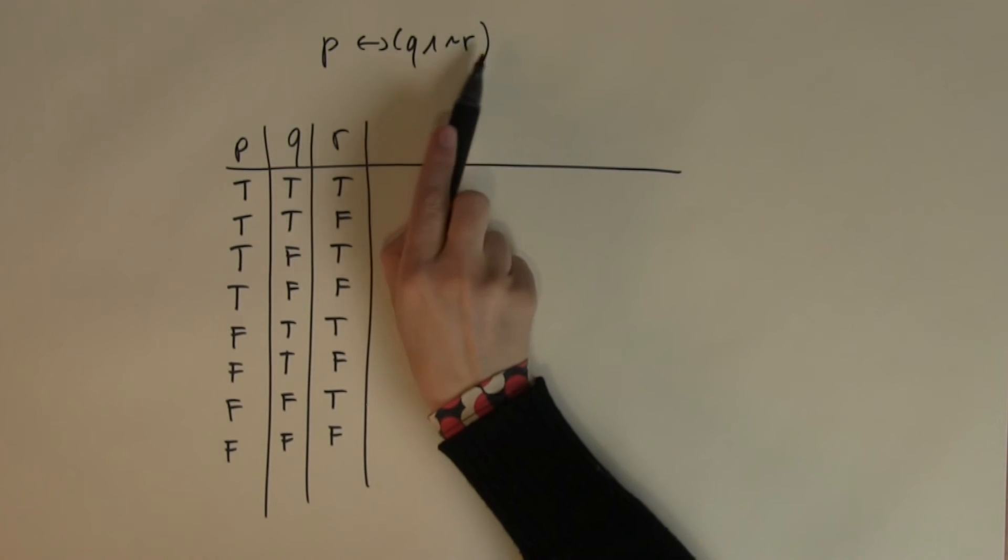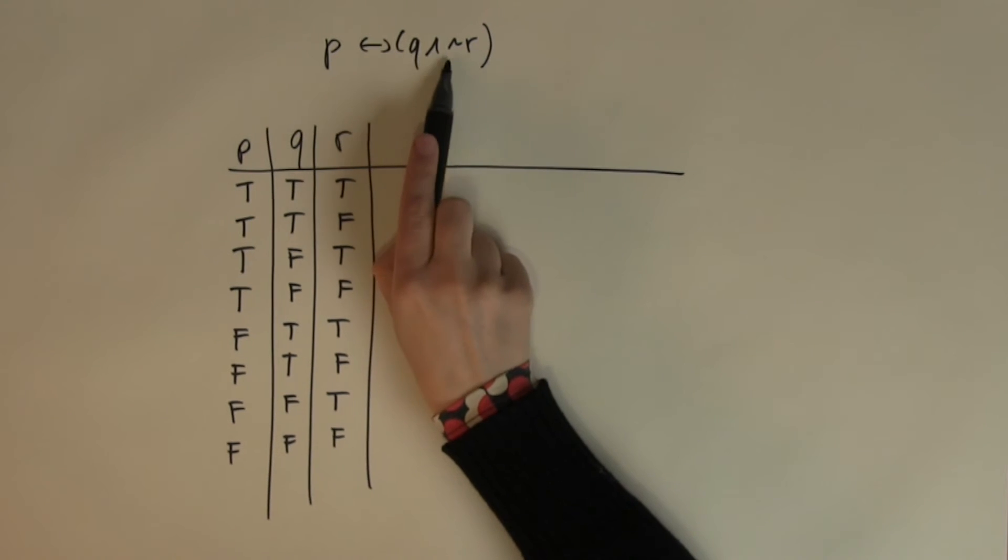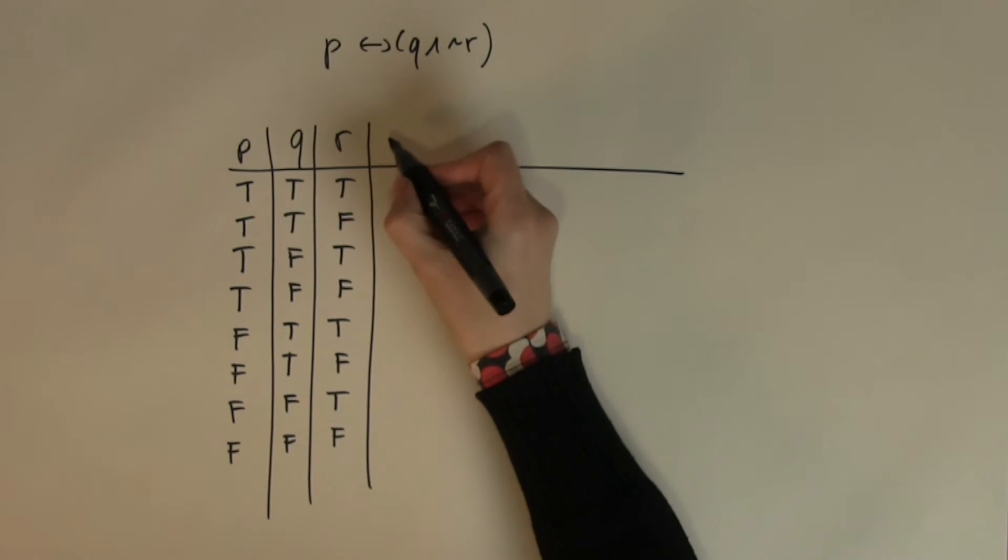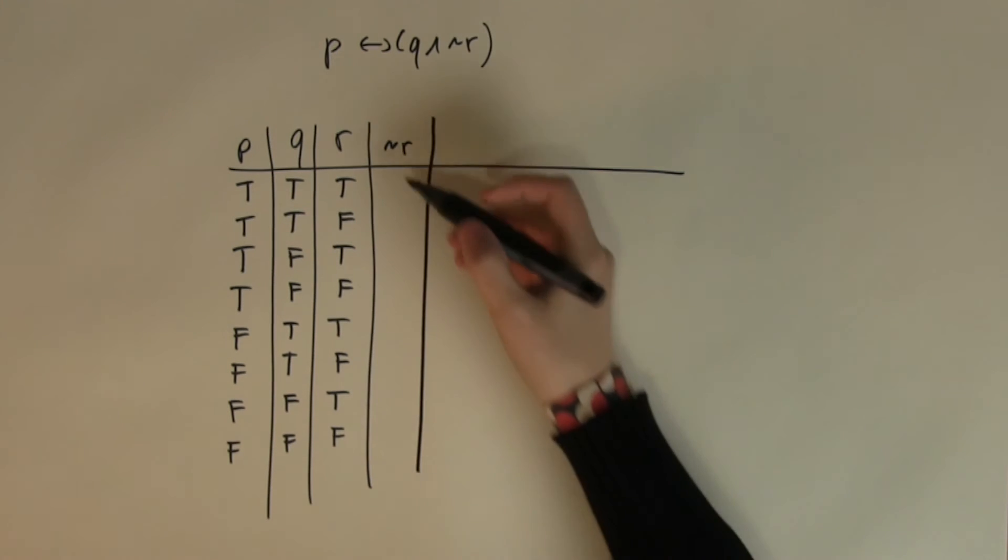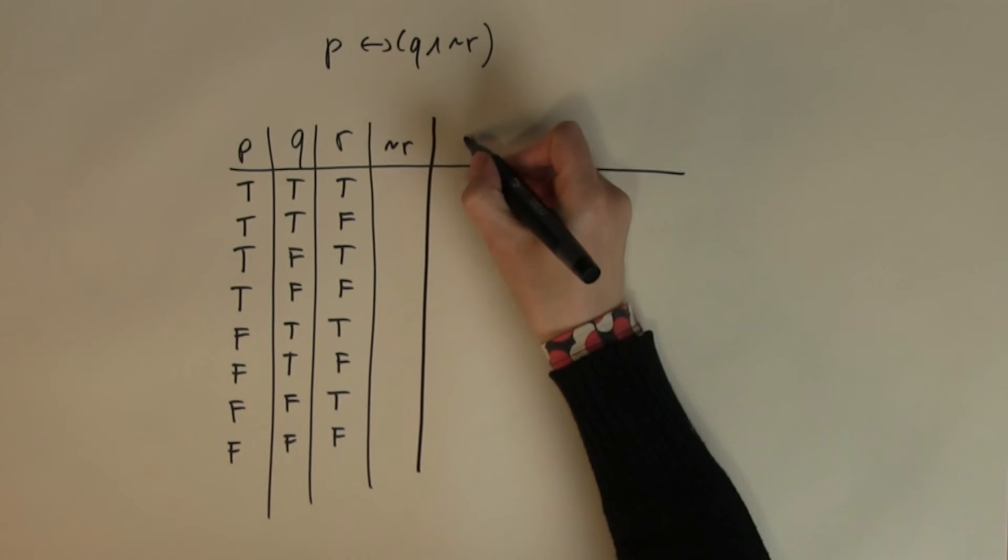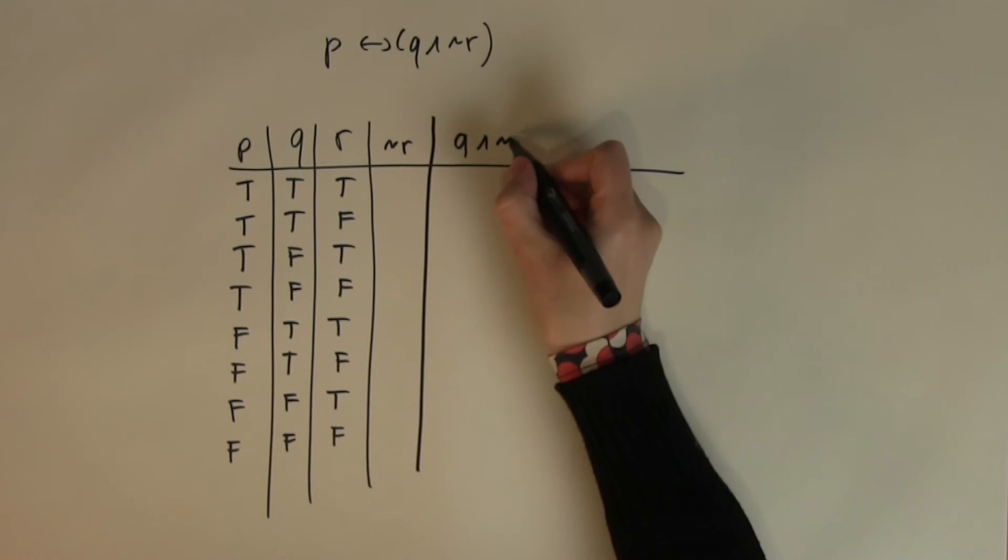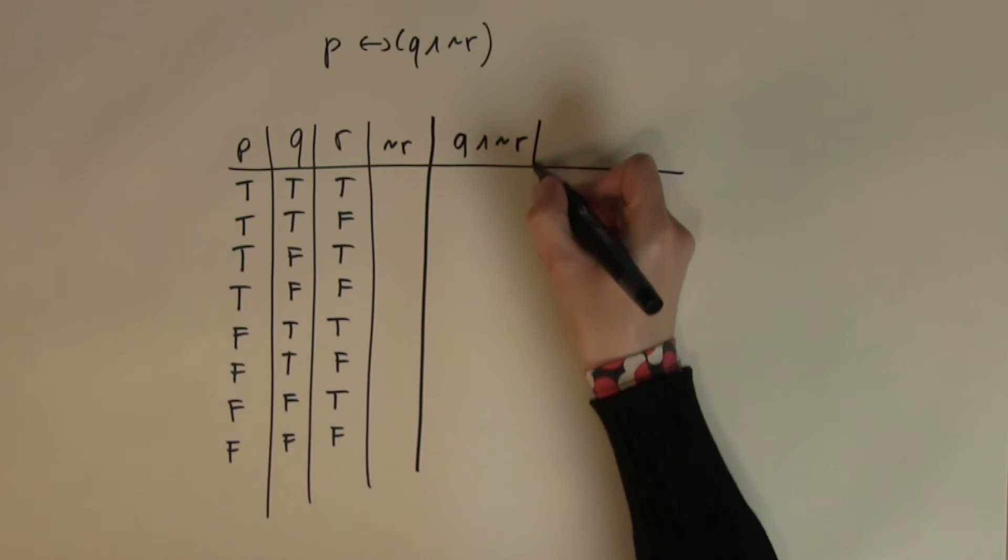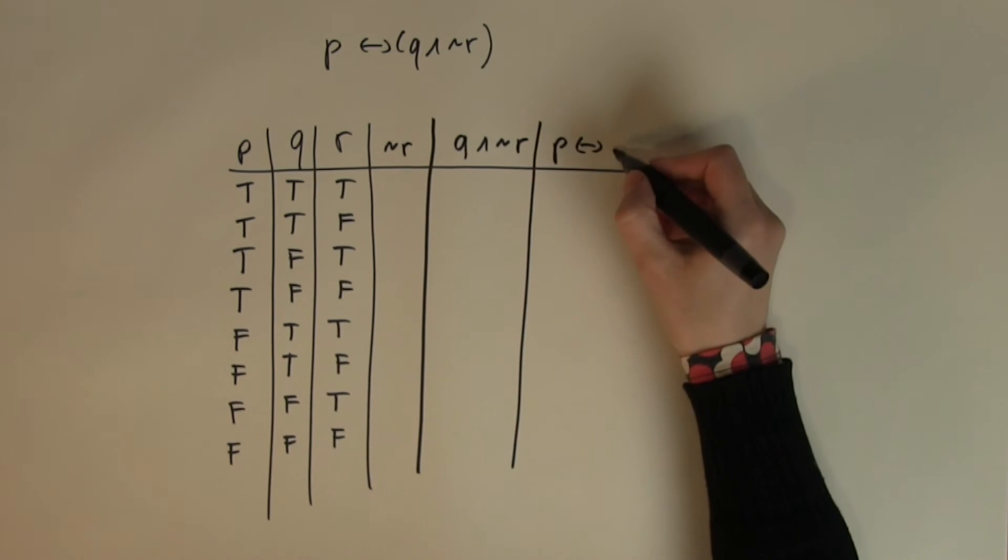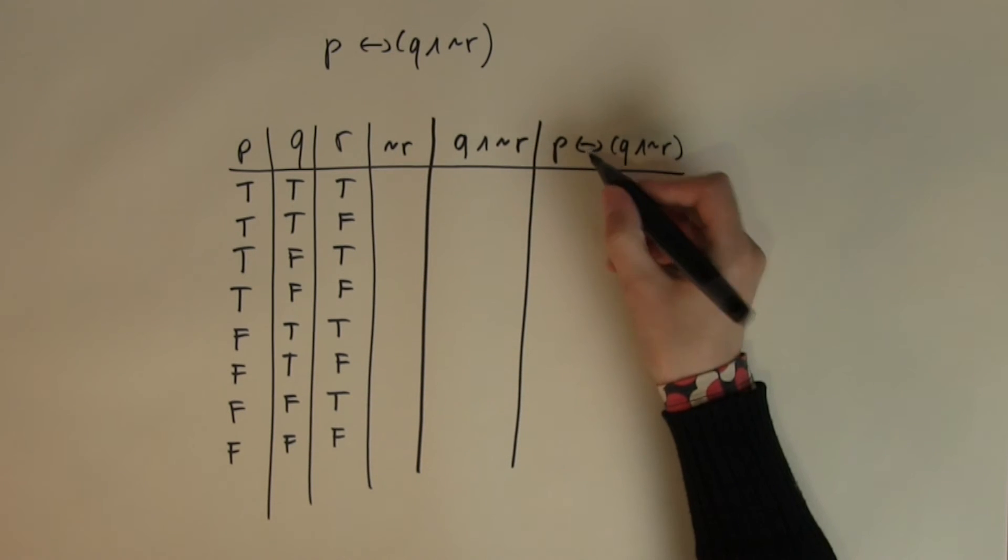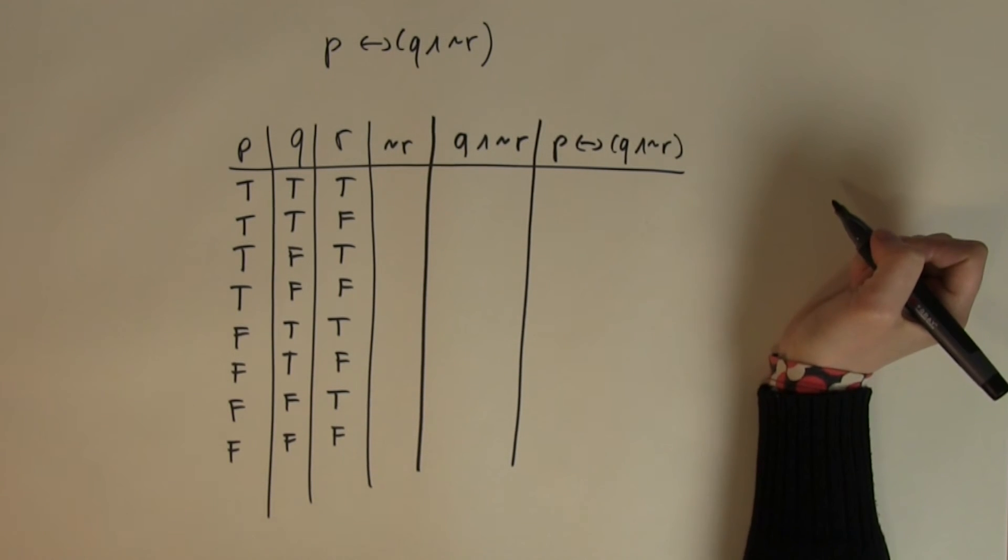Then what do I need to look at? I need to look at my priorities. There is a bracket here and inside the bracket there is Q and NOT R. To be able to combine together Q and NOT R, first I need to know what the values are for NOT R. So, that's what I need to calculate first. Once I've got the values for NOT R, I can calculate Q and NOT R. And once that's done I can combine P together with the Q and NOT R using the IF and ONLY IF operation.